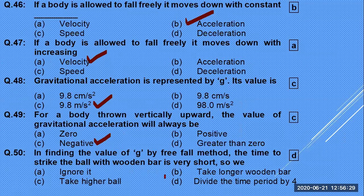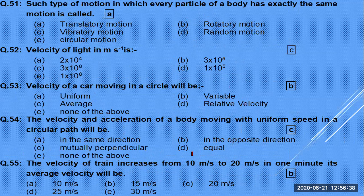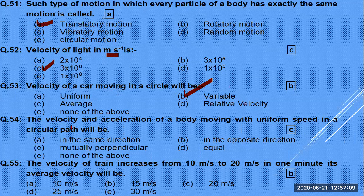Motion in which every particle of a body has exactly the same motion is called translatory motion. The velocity of light in meters per second is 3 × 10⁸ m/s. For a car moving in a circle, the velocity will be variable in direction.